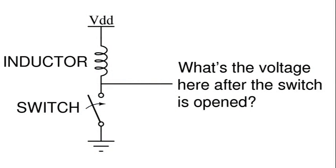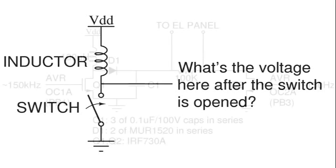An inductor is just a coil that stores energy in the magnetic field, and it tries to keep the current running through it steady. But if we suddenly stop any current from running by opening the switch, the voltage across the inductor will rise very quickly to try to maintain the flow. We can capture that voltage spike using a diode and store it in a capacitor.